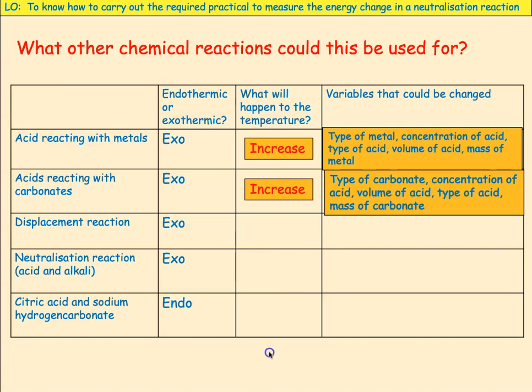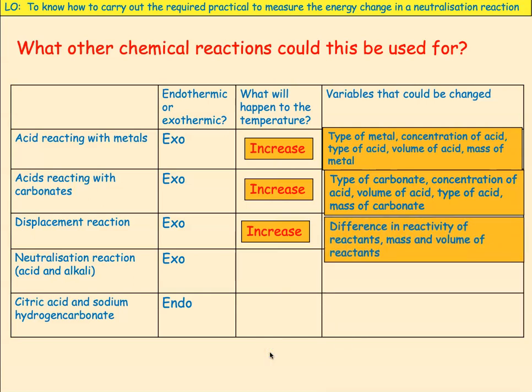A displacement reaction — again exothermic, so an increase in temperature. You could change the difference in reactivity of the reactants: try reacting copper with magnesium, copper with zinc, copper with lead, copper with tin. You could change the mass and volume of reactants.